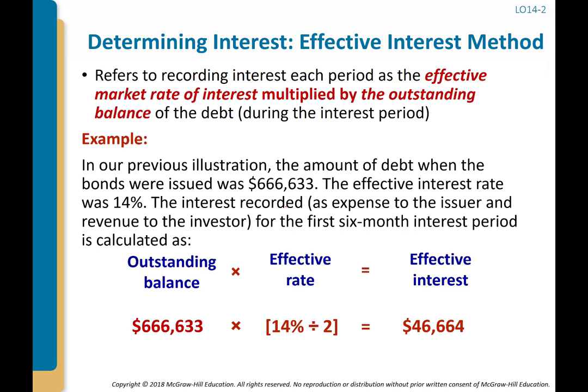To clarify: we pay $42,000 cash interest each period based on the 6% stated rate. At maturity, we pay back the full $700,000 face value even though we only borrowed $666,633. That extra $33,367 paid at maturity is effectively additional interest — it compensates the investor for the fact that the bond only paid 6% when the market was demanding 7%.